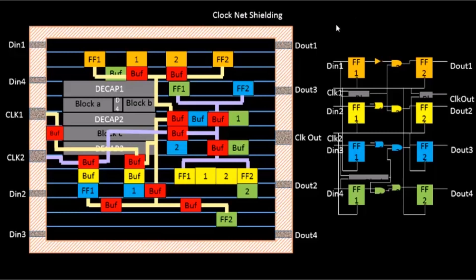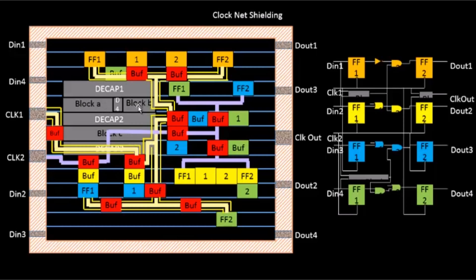Let me give a brief discussion on clock net shielding. What we do is take all the clock nets — for example, this particular clock net — and shield it like this. By shielding, we protect the clock nets from the outside world; it's like encapsulating the clock net. Any wire lying adjacent to it will have switching activity, and if the coupling capacitance between that wire and the clock net is very large, there will be coupling between them.